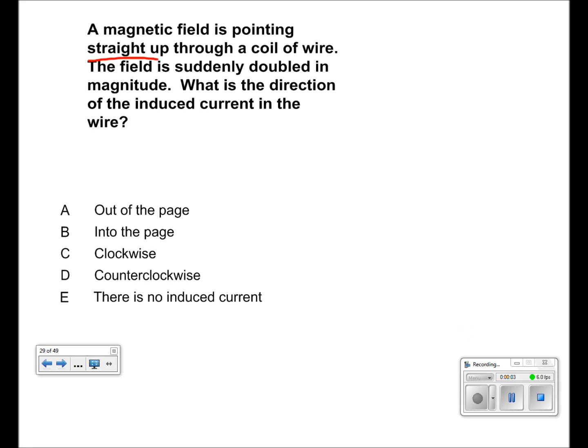Once again, we're going to draw the two magnetic fields. So this is our coil of wire, and the magnetic field is once again coming straight up, so straight out of the page. So these are our dots to represent that.